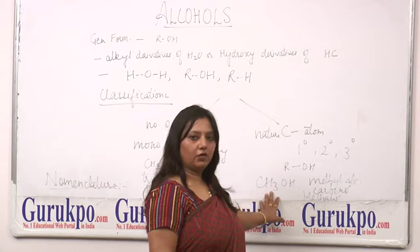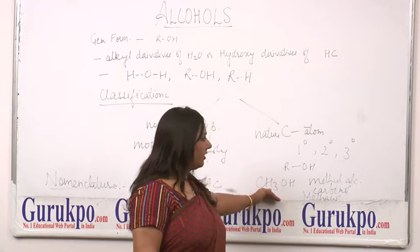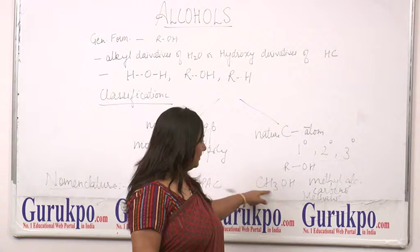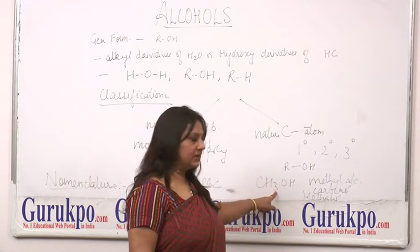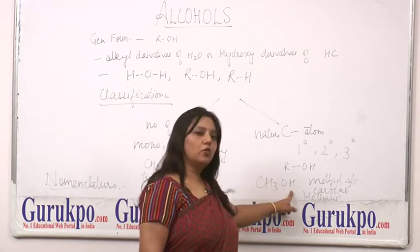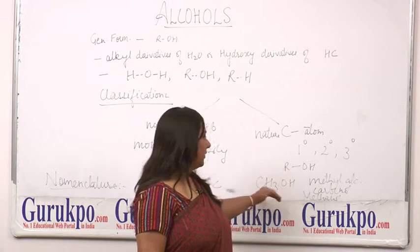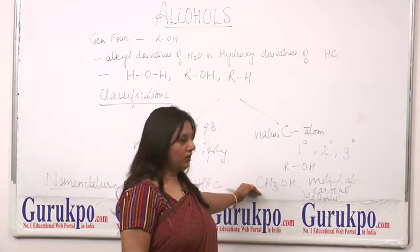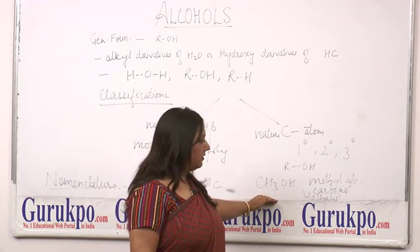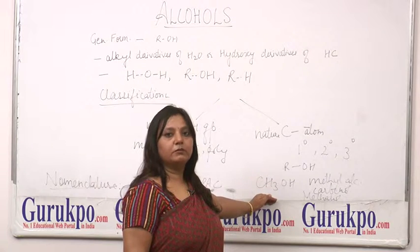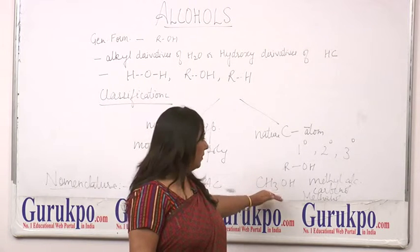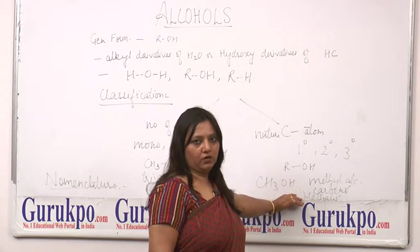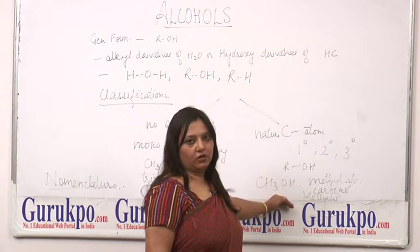this CH3OH — its trivial name is methyl alcohol, because the CH3 group is called methyl and OH represents alcohol. Its derived name is carbinol, and its IUPAC name is methanol, because CH3 is 'meth' and OH represents 'ol' — methanol.